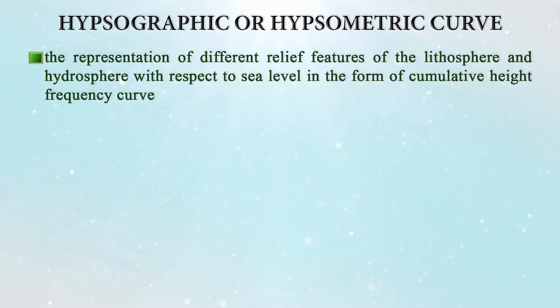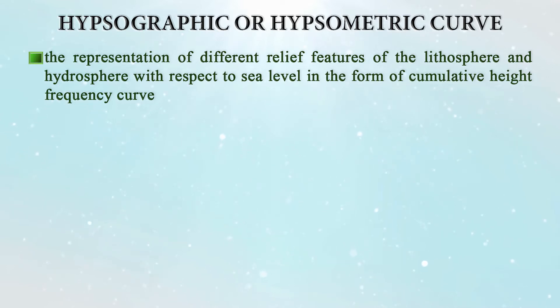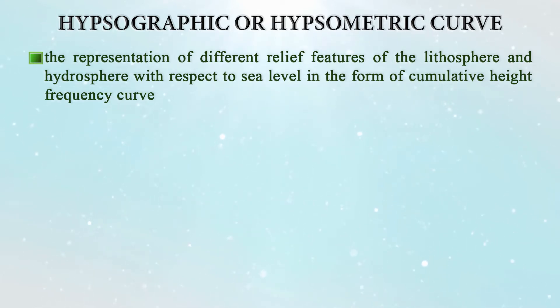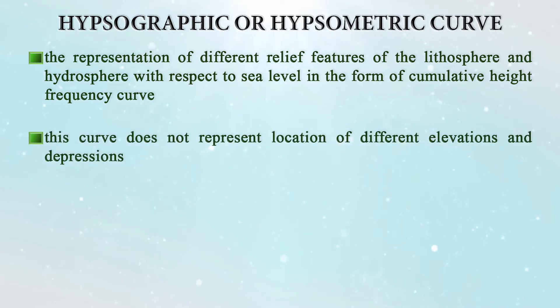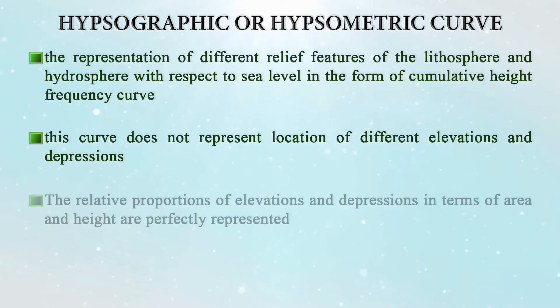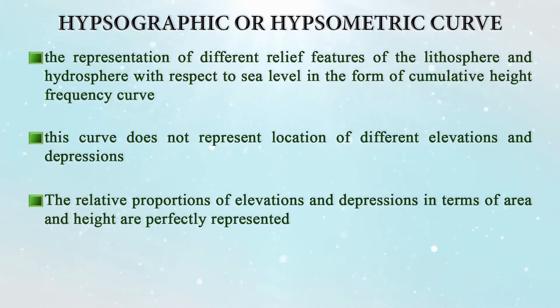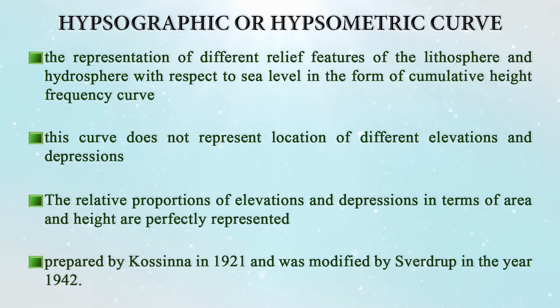Coming to the hypsographic or hypsometric curve — it is the representation of different relief features of the lithosphere and hydrosphere with respect to sea level, in the form of a cumulative height frequency curve. This curve does not represent the actual location of different elevations and depressions; only the relative proportions of elevations and depressions in terms of area and height are represented. It was first prepared by Kosina in 1921 and modified by Sverdrup in 1942.